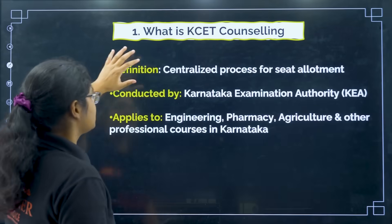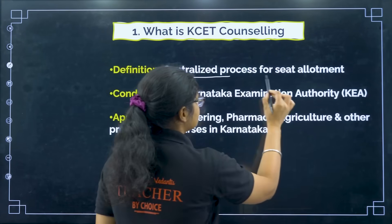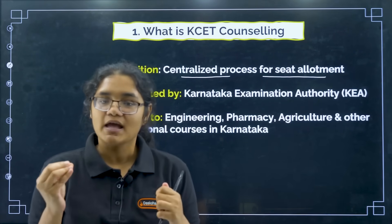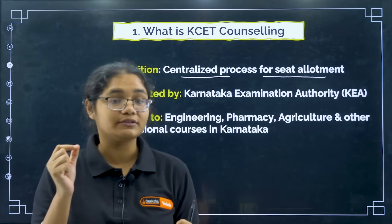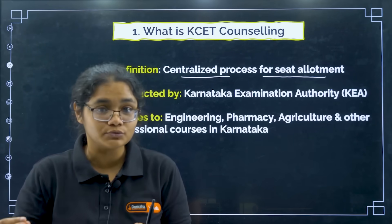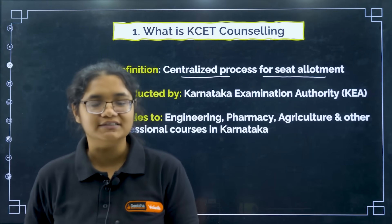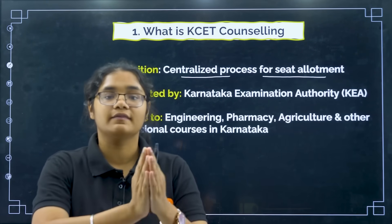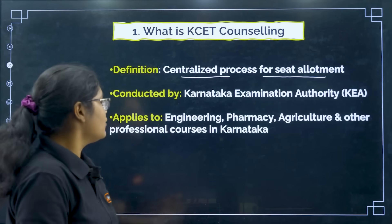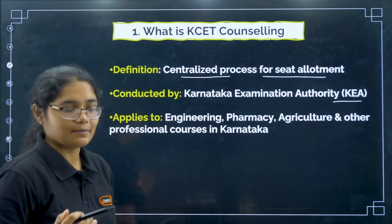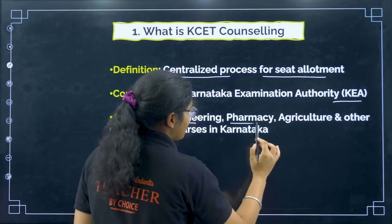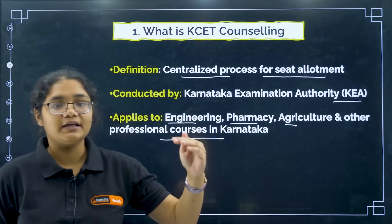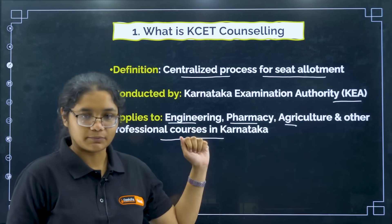KSA counselling is a centralised process for seat allotment. Almost 3 lakh students have given the KSA examination, and to determine which student will get which college, the process used here is called the counselling process. It is conducted by KEA — the Karnataka Examination Authority — and it applies to engineering, pharmacy, agriculture, and all other professional courses in Karnataka.